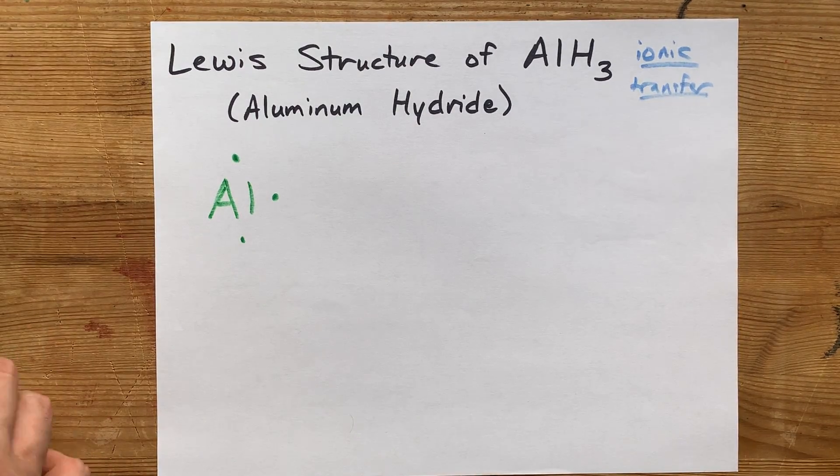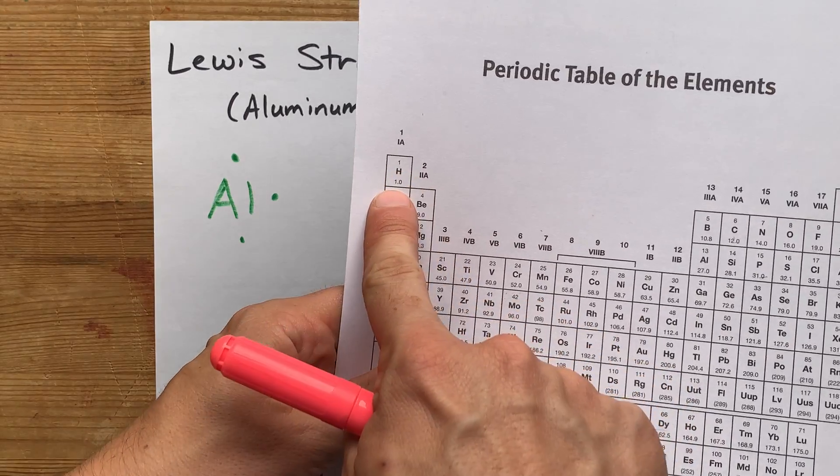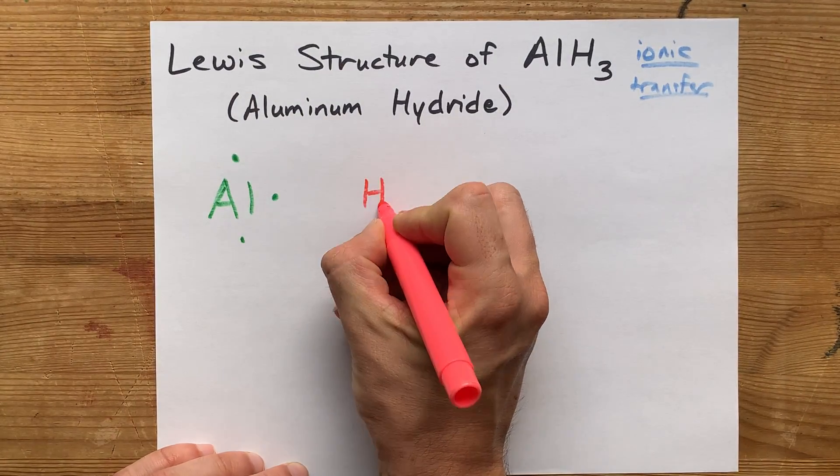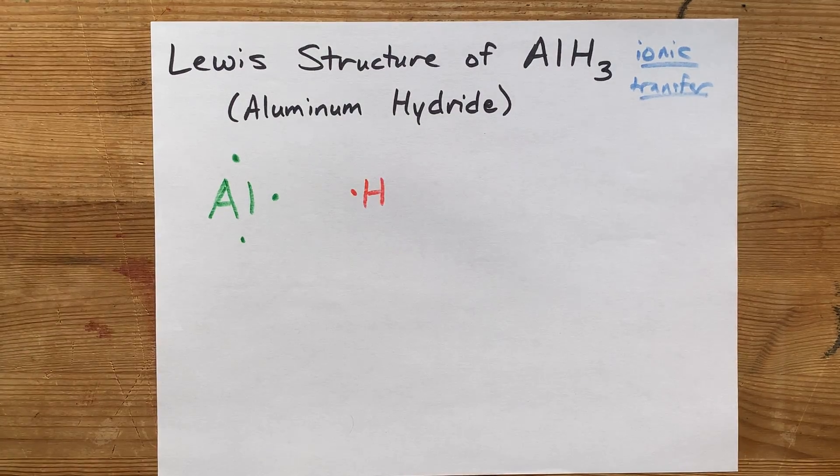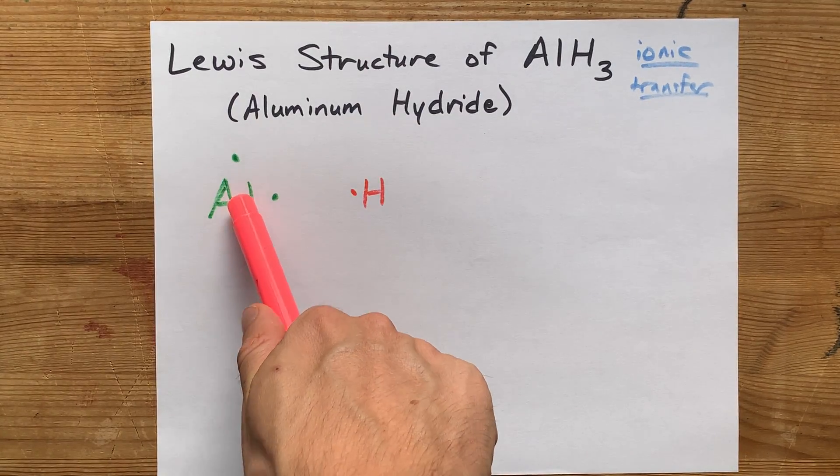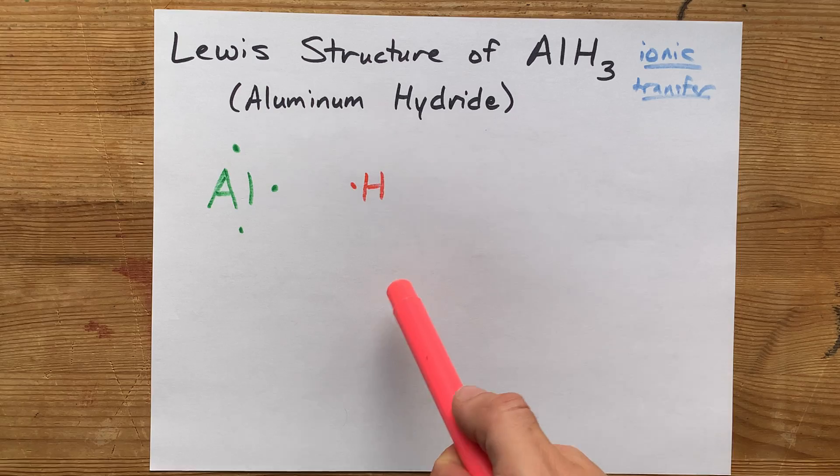Hydrogen is in group one of the periodic table, so it will bring one valence electron with it. Now, the metal will be giving electrons away to the non-metals.